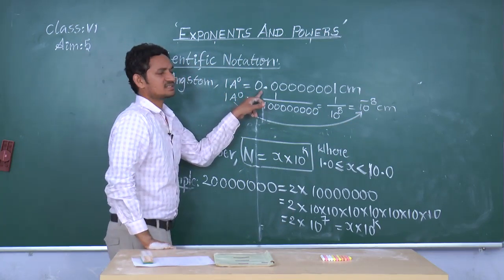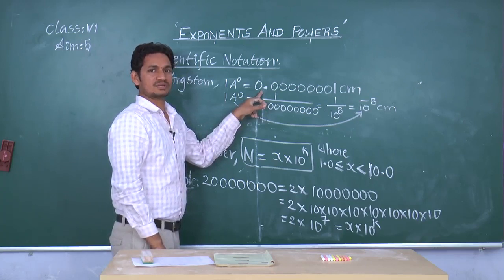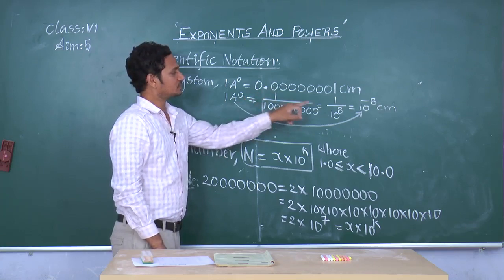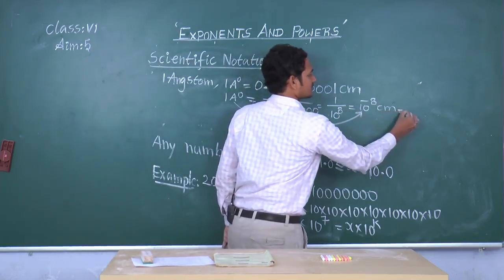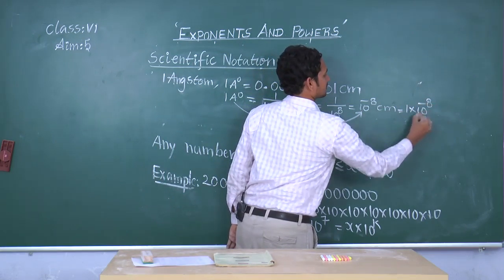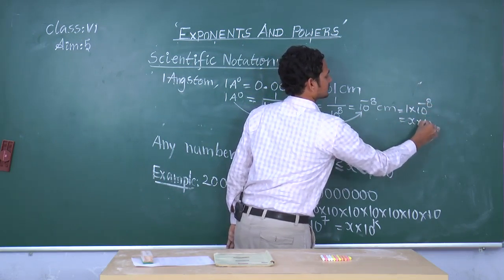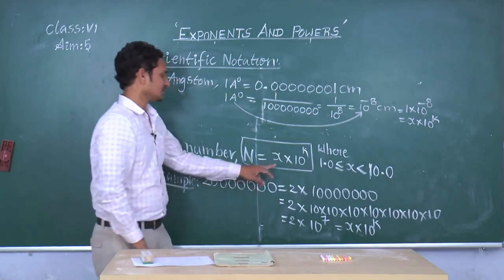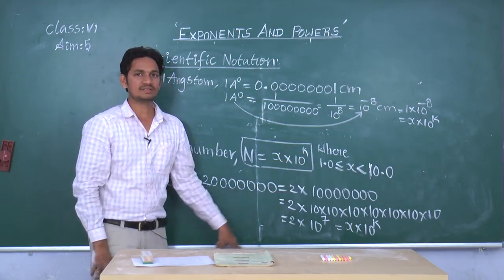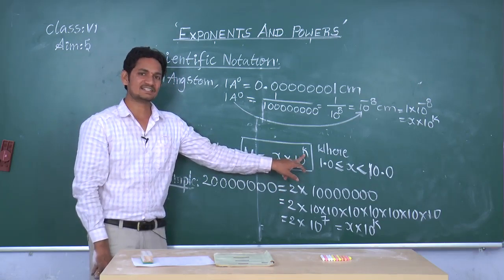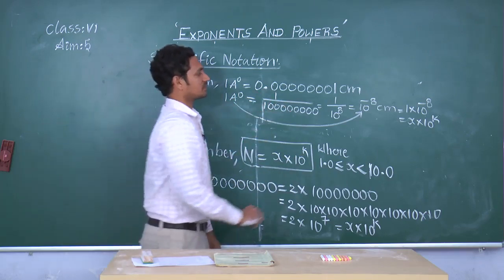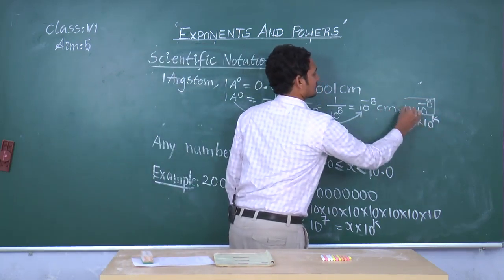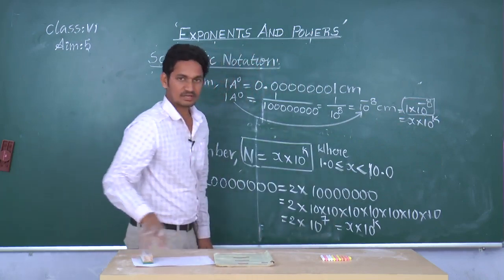Previously, this was a very very small number. Of course, it is very difficult to remember and difficult to read. But if you convert into scientific notation, finally it is looking like 1 into 10 power minus 8 — it is looking like x into 10 power k, where k is any integer. So if you convert into simplest form, we can remember it in an easy way.